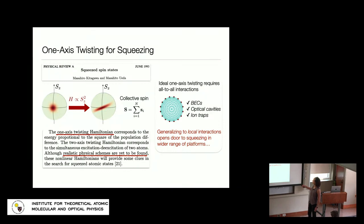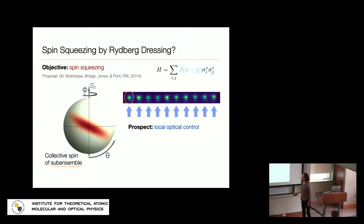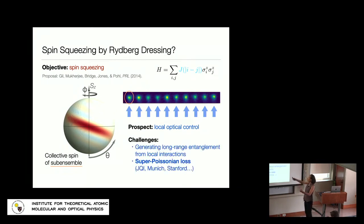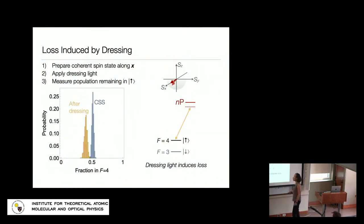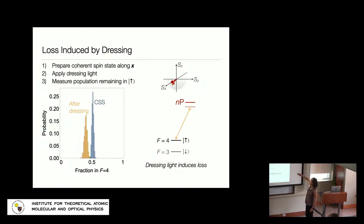Can we use local interactions to squeeze? In the context of Rydberg systems, this gives a nice way to have arrays with local optical control of entanglement. The challenge, aside from interactions being local rather than all-to-all, is the loss problem mentioned earlier. Any multi-body loss process will add noise that could degrade squeezing. We've shown we have the right mean-field dynamics, but let's look at whether this light is causing loss. In an early experiment, we prepared a coherent spin state and applied dressing light, then measured a histogram of the fraction of atoms in the spin-up state — with no dressing in gray and with dressing in yellow.